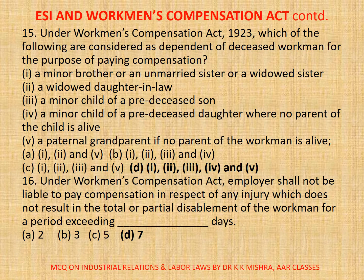Question 15. Under Workmen's Compensation Act 1923, which of the following are considered as dependents of deceased workmen for the purpose of paying compensation? One: a minor brother or an unmarried sister or a widowed sister; Two: a widowed daughter-in-law; Three: a minor child of a pre-deceased son; Four: a minor child of a pre-deceased daughter where no parent of the child is alive; Five: a paternal grandparent if no parent of the workman is alive. Correct option is D — all five statements are correct.